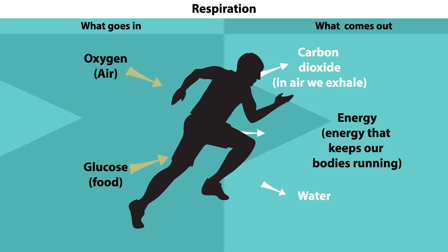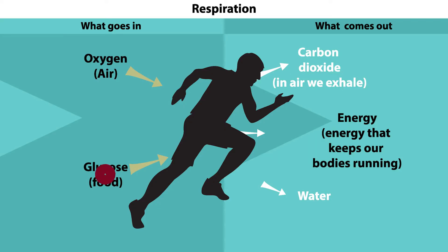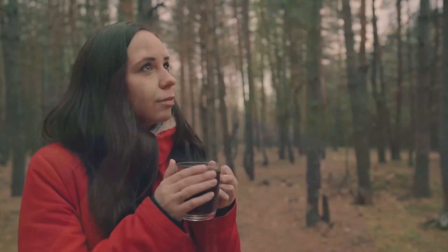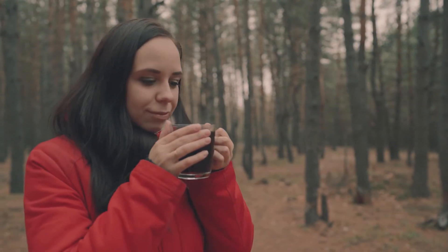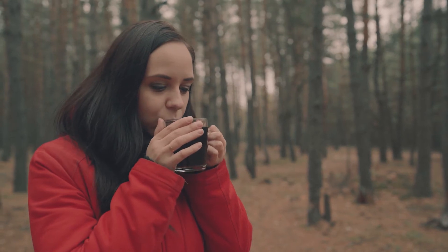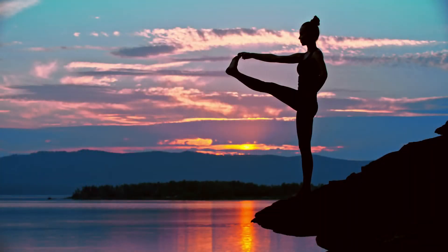This process uses the oxygen we breathe and the glucose from the food we eat to produce energy. This energy allows us to run and talk and do all the things that we want our bodies to do. It also does things you may not always be aware of, like keeping you warm or balancing the amount of water and nutrients in your body.